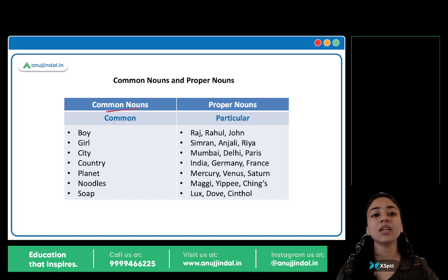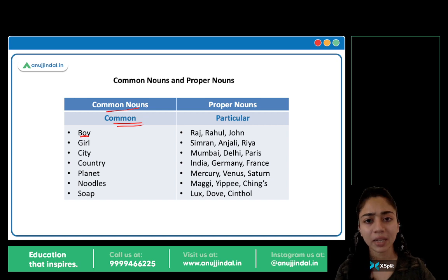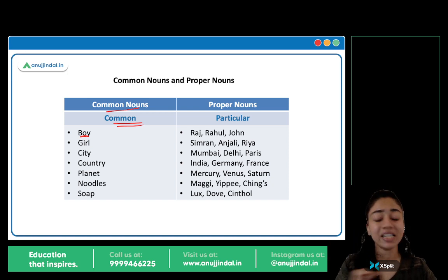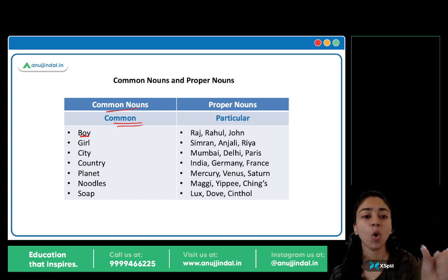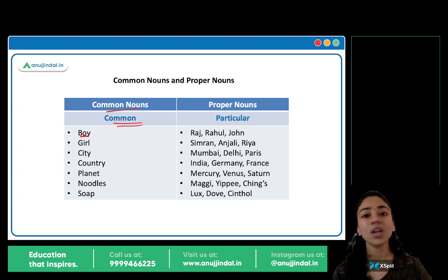What are common nouns? Common nouns are common names — common name means that everyone is the same, everyone is common. If I say boy, girl, man, woman — it's a common name. I could be talking about any boy, any man, any girl, any woman. I am not talking about a specific person. Boy represents all boys, man represents all men, city represents all cities, country represents all countries. So, it is common nouns.